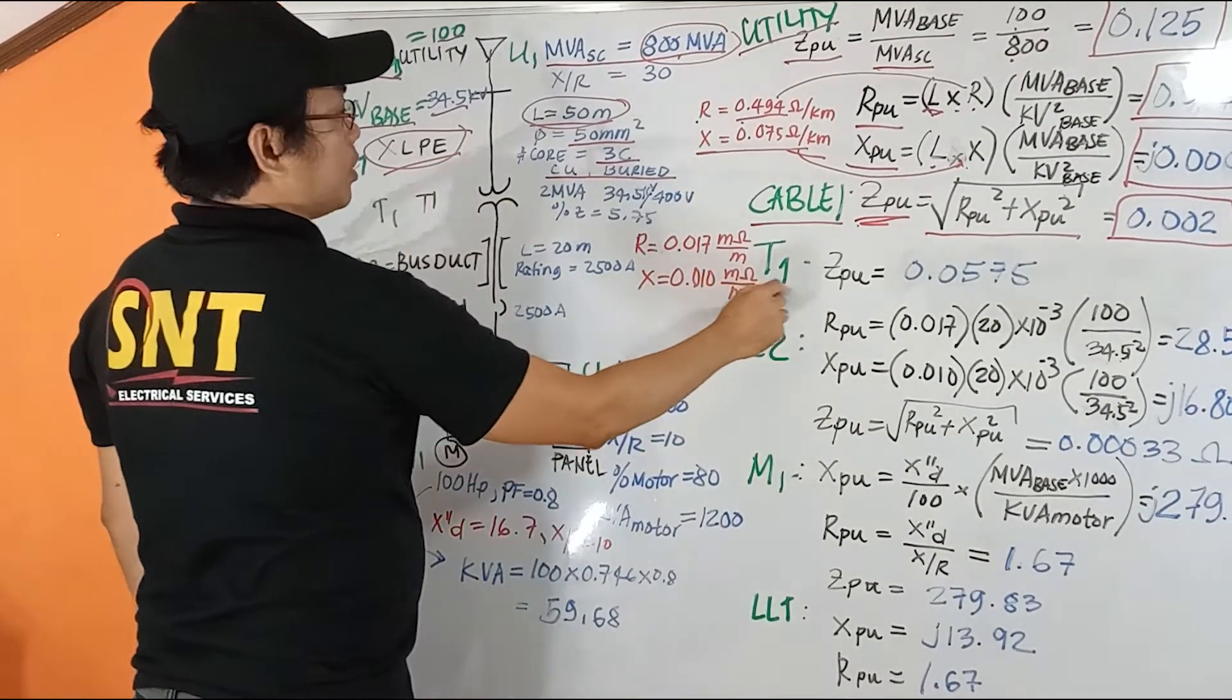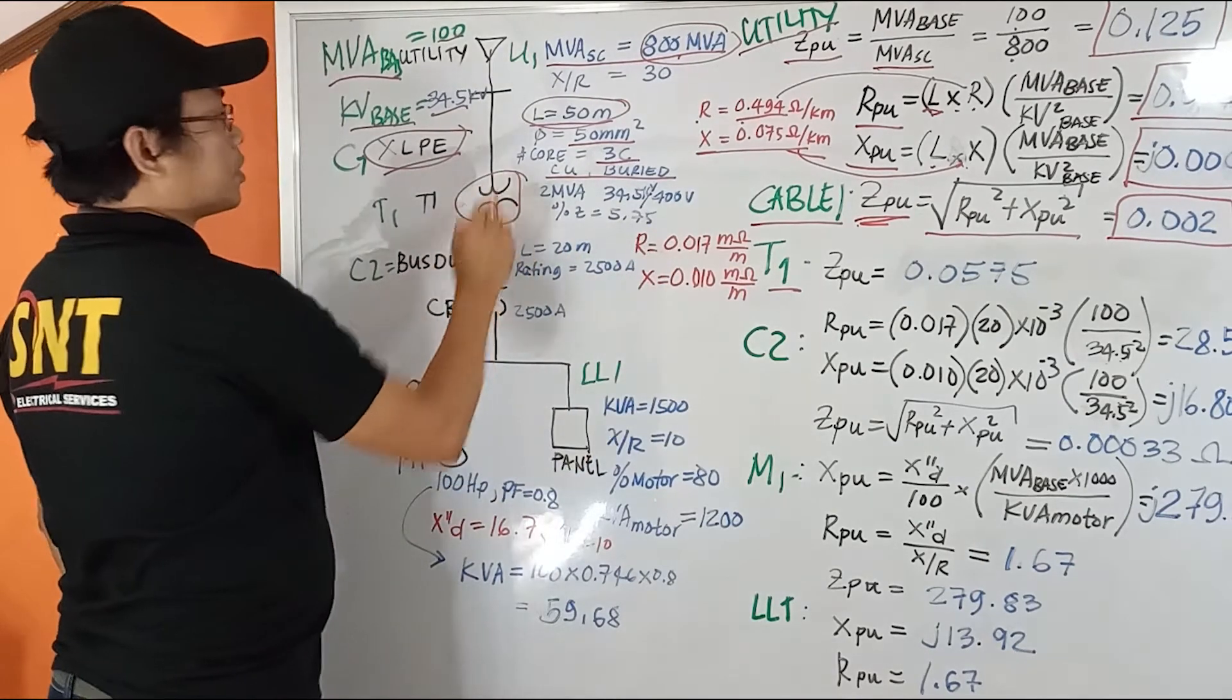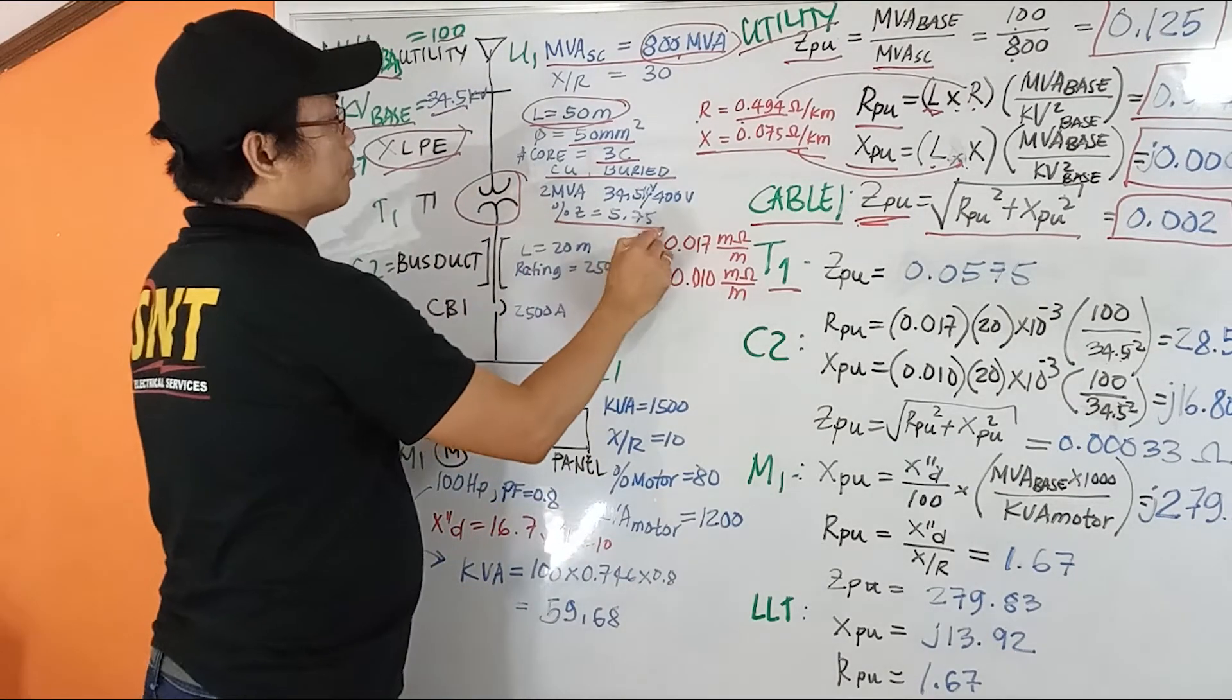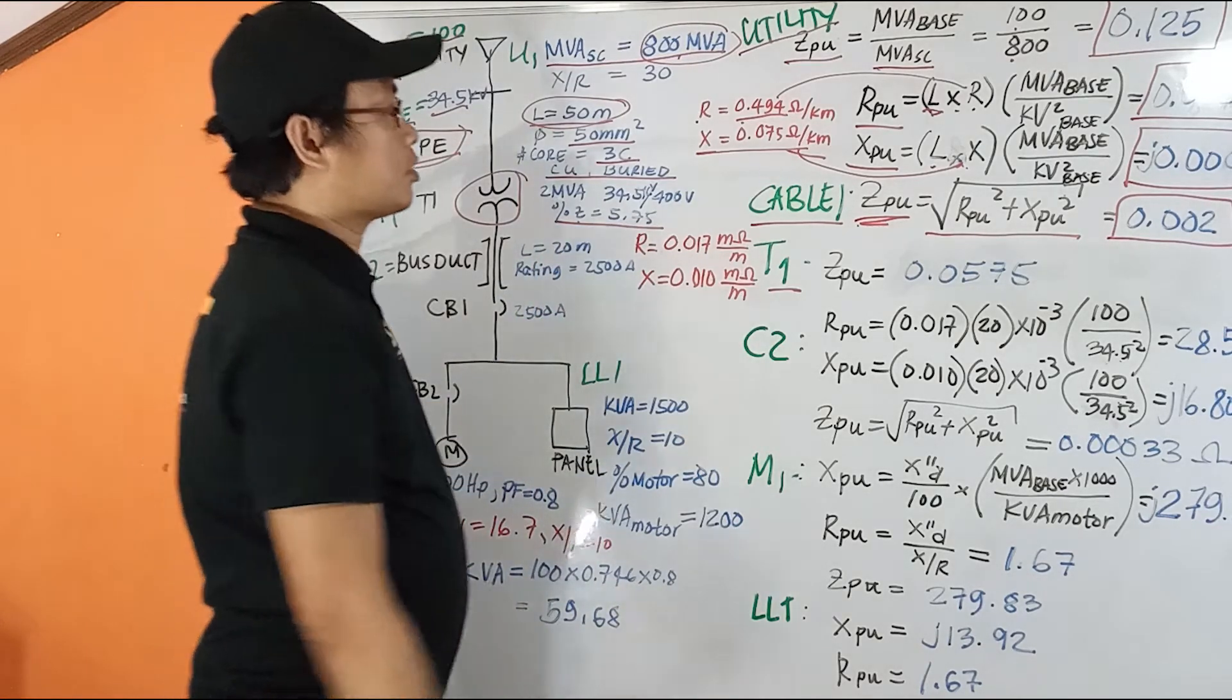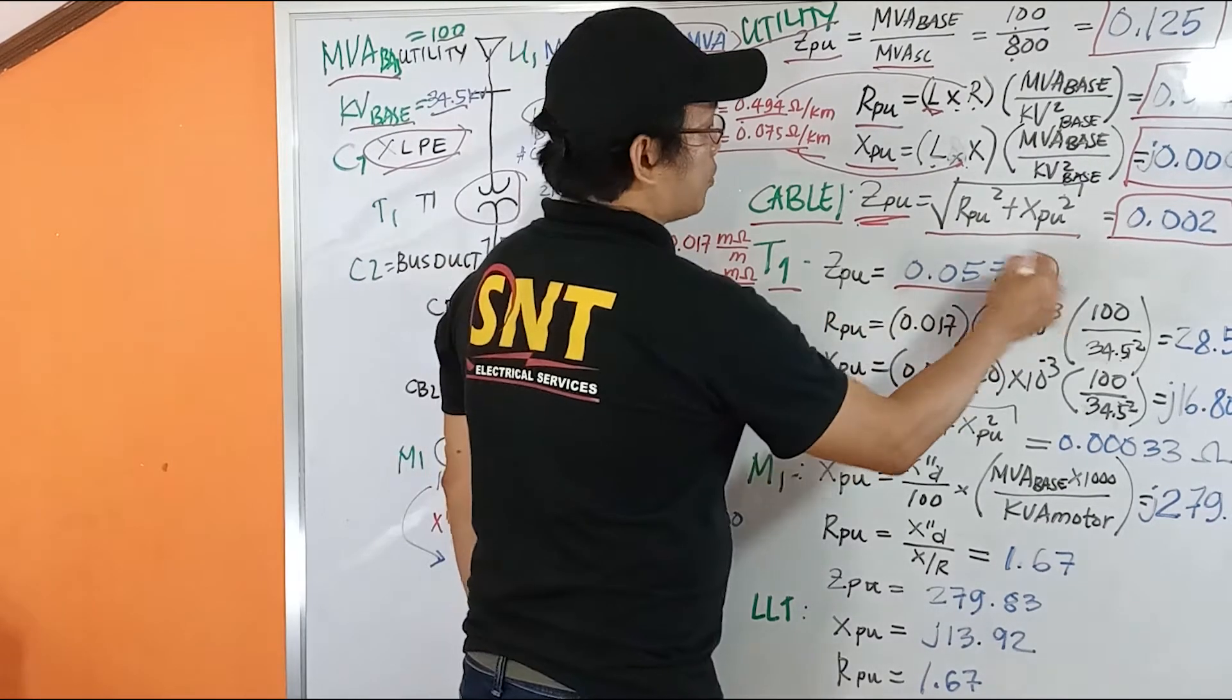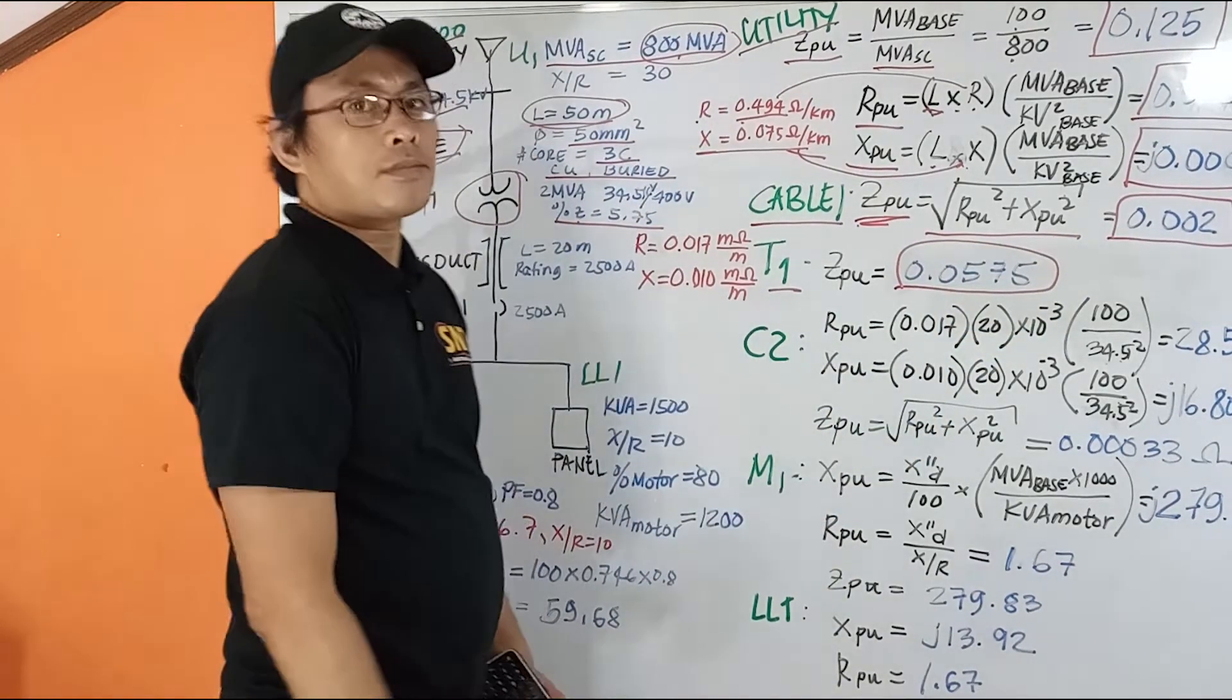So then we get our impedance for the transformer, which is given at 0.75, so that's going to be 0.0575.